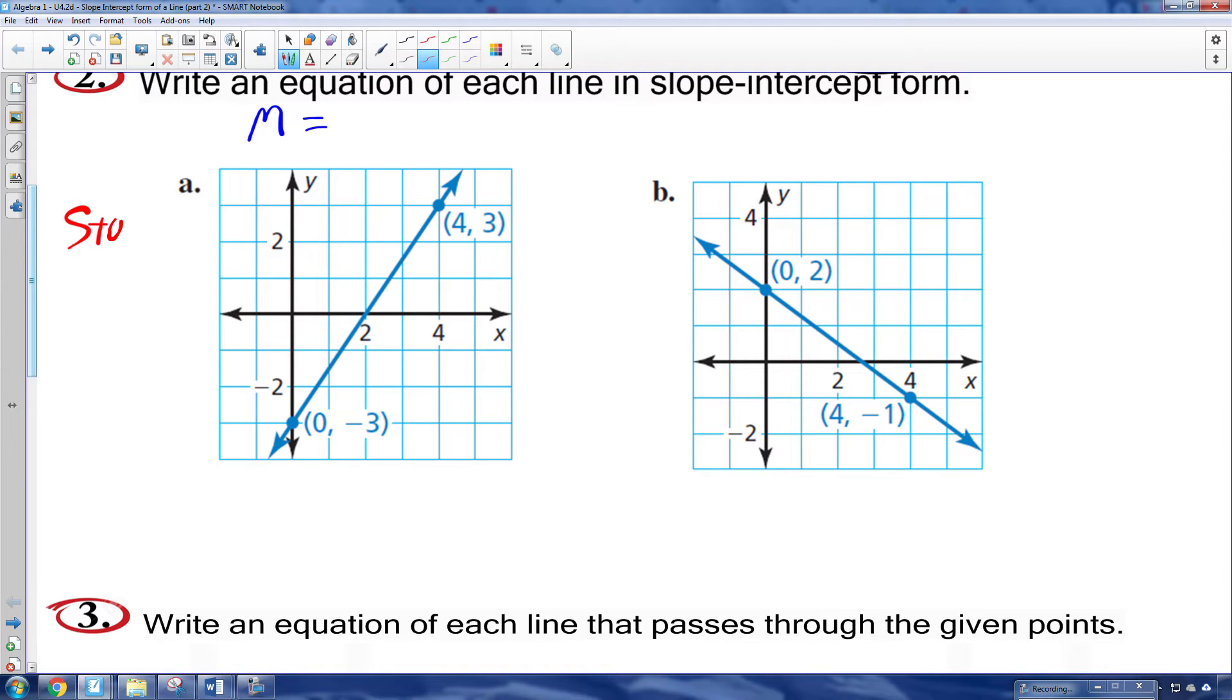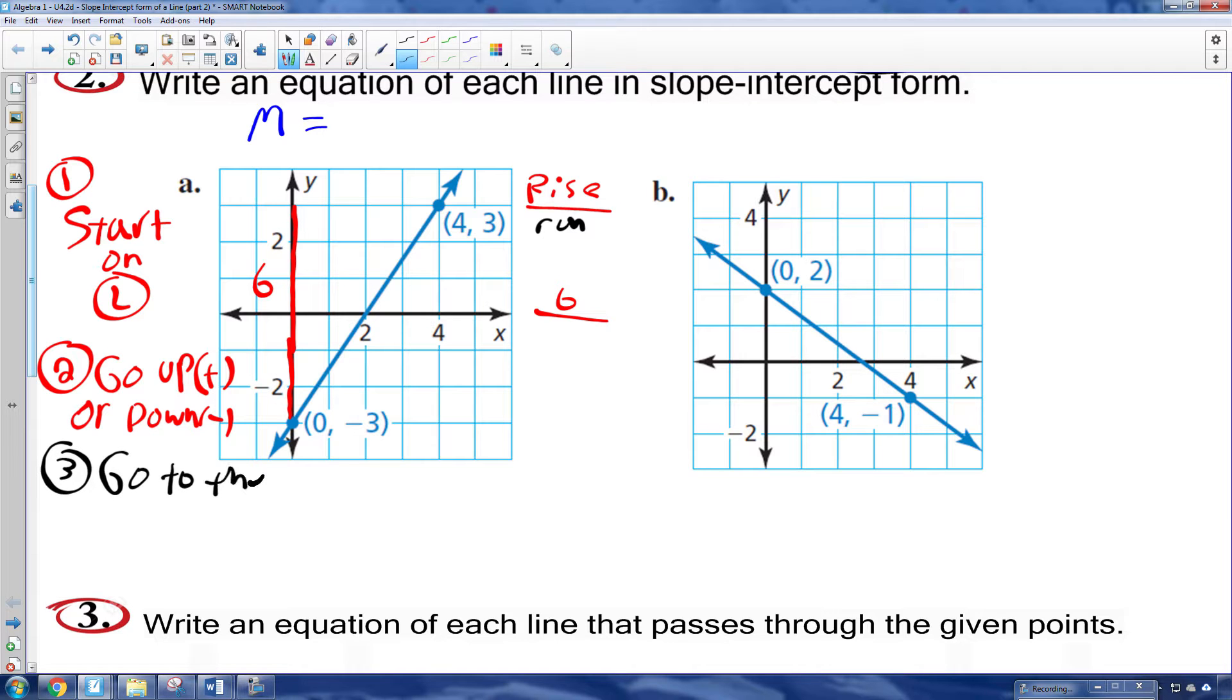3 over 2? Or 3? Yeah, rise 3, run 2. Let's check it out. I'm going to use red. Here are the steps if you like. Start on the left. That's step 1. Go up, which is positive, or down, which is negative. So I'm going to start on the left. I'm going to go up 1, 2, 3, 4, 5, 6. I went up 6 in this case. So my rise is 6. So my rise over my run is going to be 6 over. Now let's do our run in black. Our run is step 3. Go to the right until you hit the second point. So now we're going to go right until we hit a second point. 1, 2, 3, 4. So my run is 4.